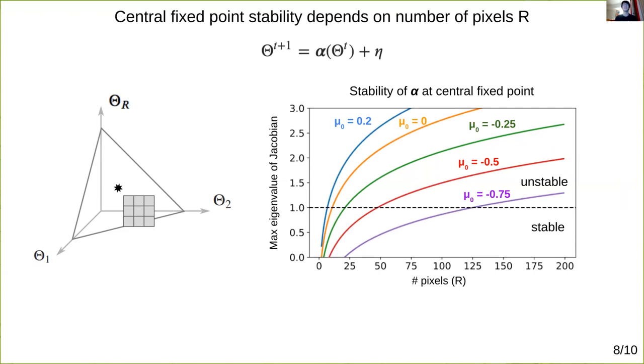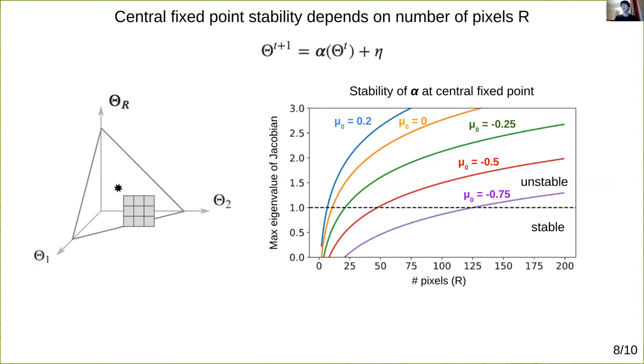This moreover depends on the mean synaptic weight mu naught, or the scaling of the mean synaptic weight, which provides smooth control of where this transition occurs.